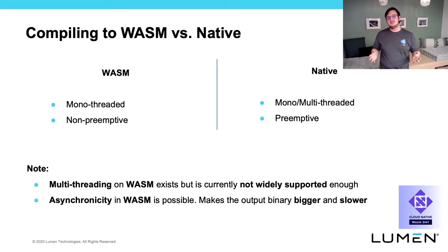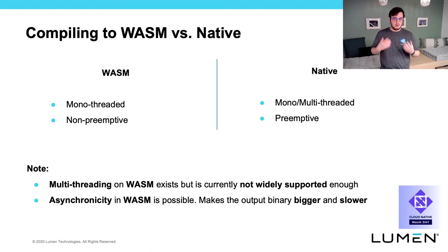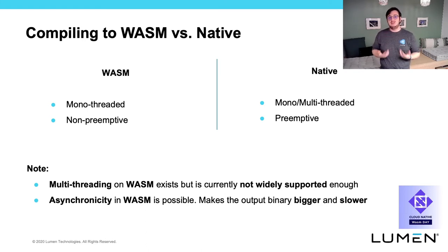Concerning the differences between compiling to Wasm and compiling to native platforms: due to the way that most JavaScript engines work, Wasm is mono-threaded and non-preemptive. All calls to Wasm functions are blocking and must return before letting any other JavaScript code execute. On the contrary, native platforms can be mono or multi-threaded and are almost always preemptive, meaning that threads of execution can stop in the middle of a function and continue later, letting time for other processes to run.